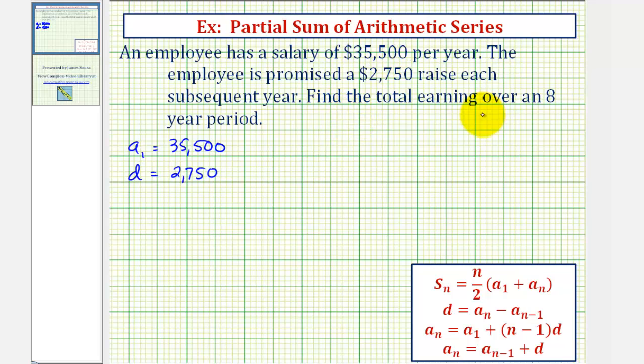Our goal is to find the total earnings over an eight year period, so we're trying to find s sub eight, or the sum of the first eight terms in this arithmetic series. And because we're looking for s sub eight, this also tells us n equals eight.